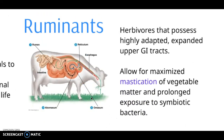The next topic is ruminants. For a cow, for example, they eat a lot of grass, which is not as nutritious as the same amount of meat. To accommodate for that, they have extra parts of their digestive system — expanded upper GI tracts — that allow food to be held in the upper GI tract for a longer amount of time, which allows bacteria to digest the food better. As the food is held in the GI tract, the bacteria keeps digesting it and extracts as much nutrition from the food intake as possible.